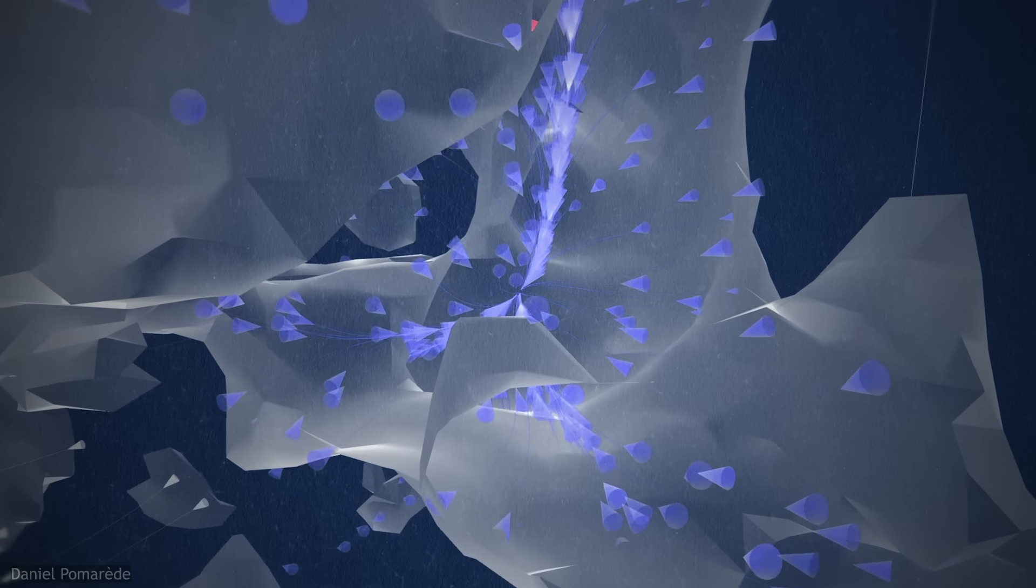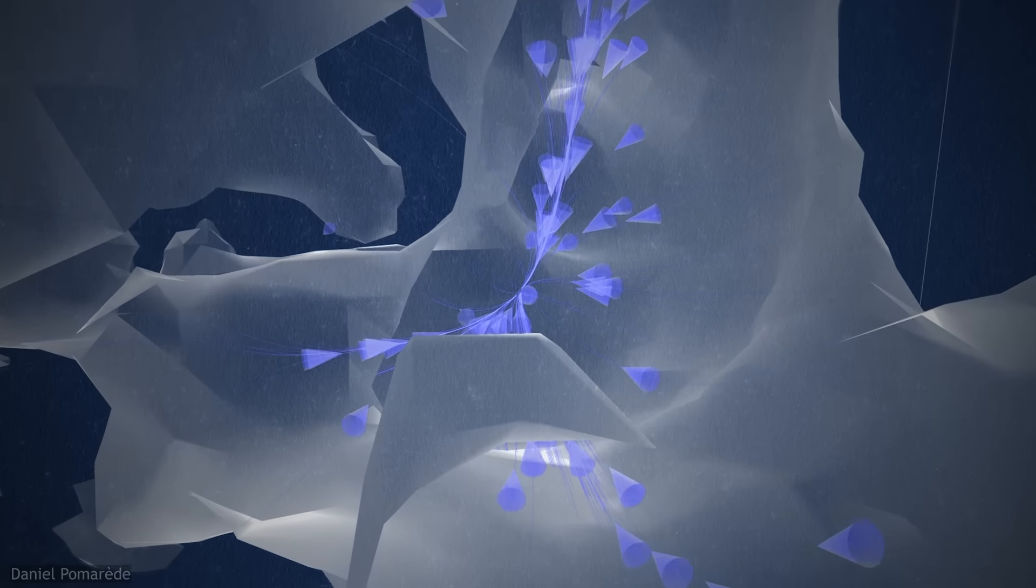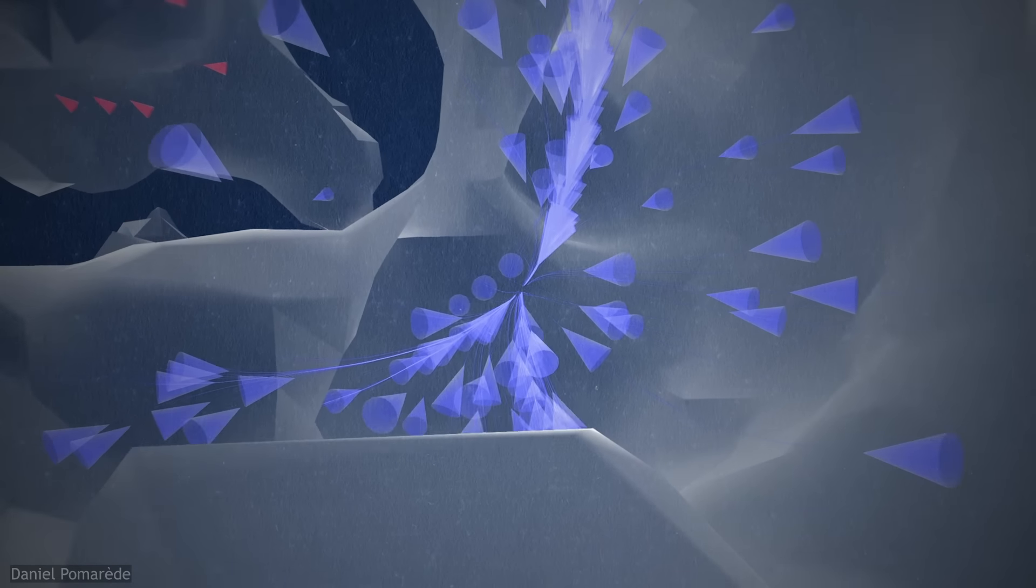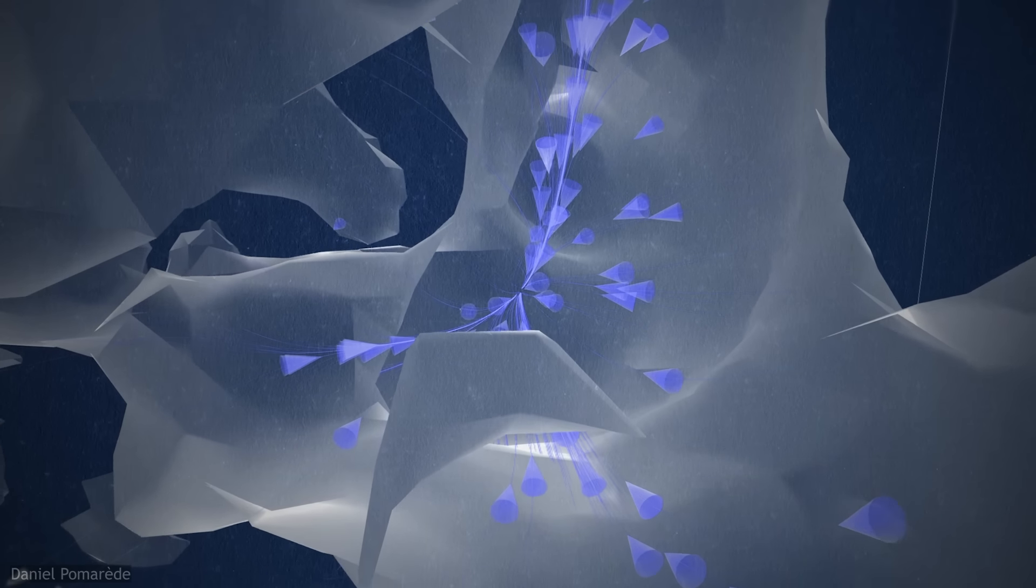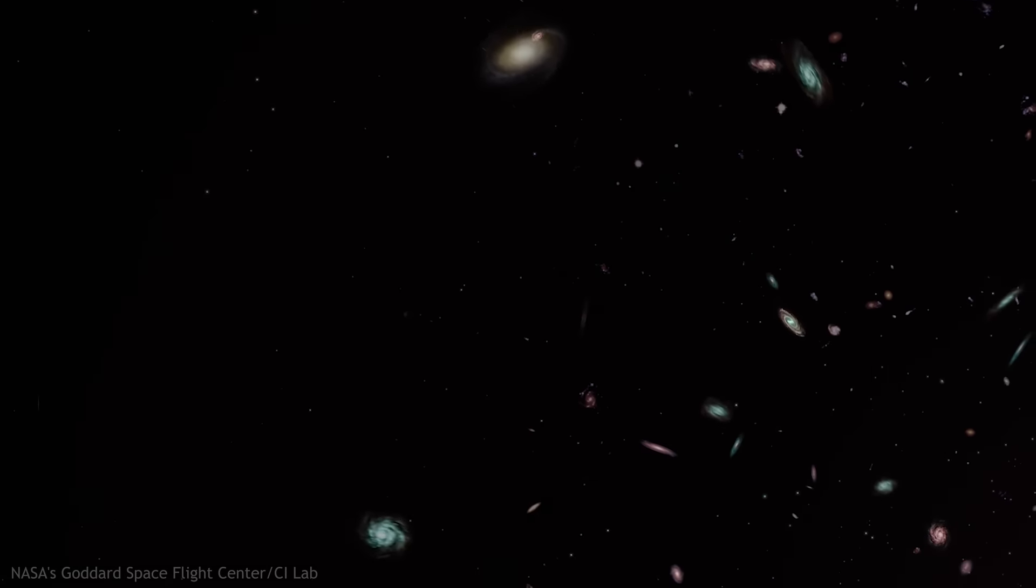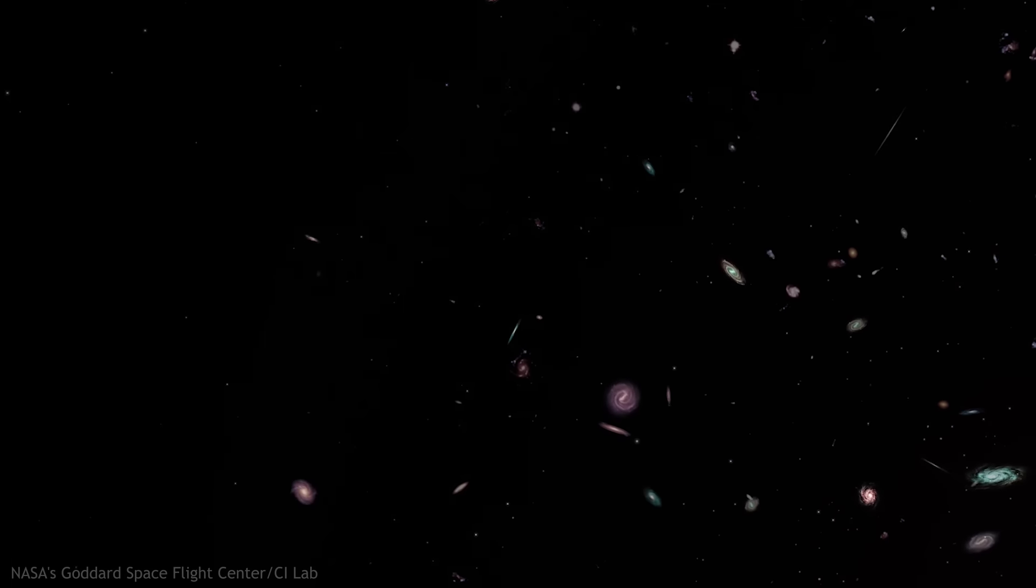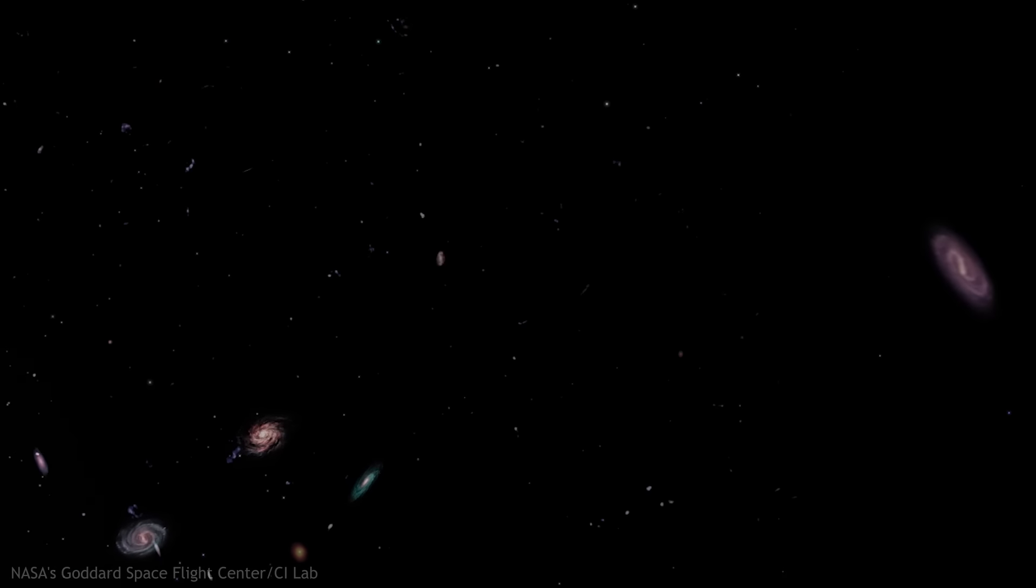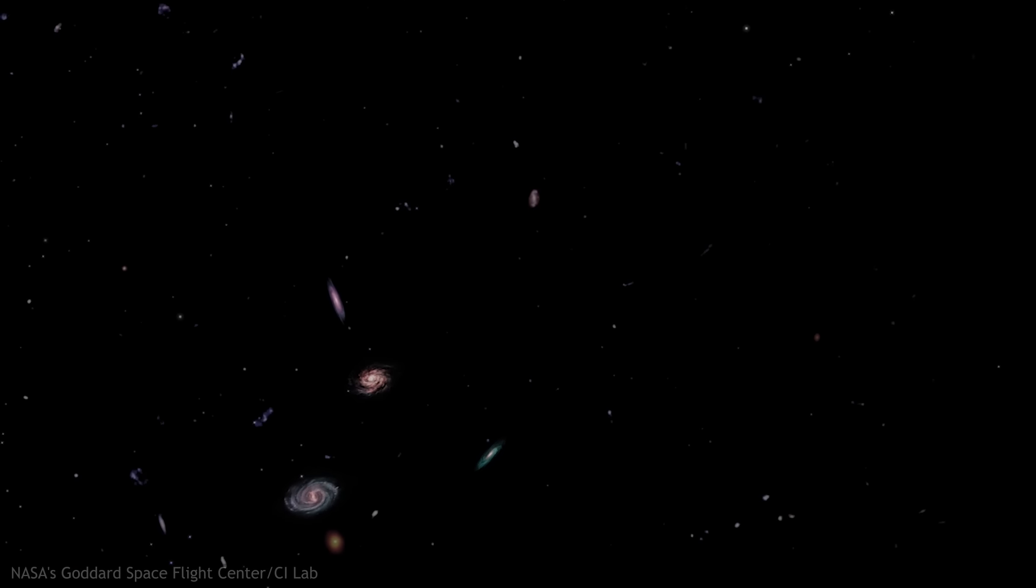Billions of years from now, our passage through space towards the Great Attractor will slow down, stop, and reverse. Over the course of hundreds of billions of years, we will see those distant clusters and galaxies dim and fade from view, eventually slipping over our cosmological horizon, caught up in the accelerated expansion driven by dark energy.